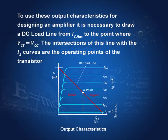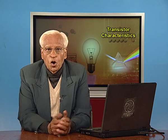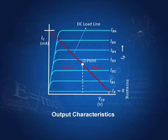Then we draw a line known as the DC load line. This runs from IC maximum down to the point where VCE is equal to VCC — that is, from maximum IC to maximum VCE. Where the load line intersects the curves are the operating points for the transistor. The most important of these operating points is somewhere in the middle, called the Q point or quiescent point.